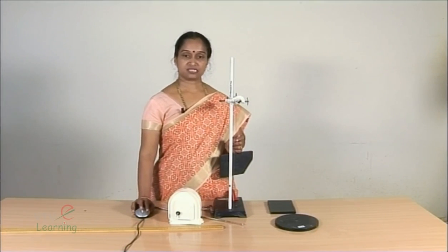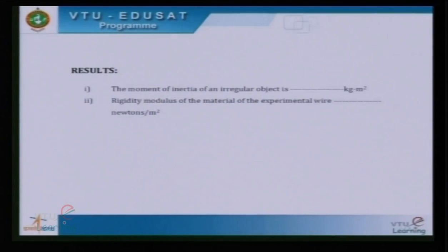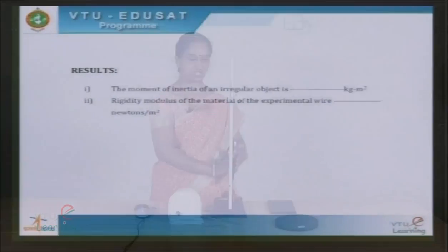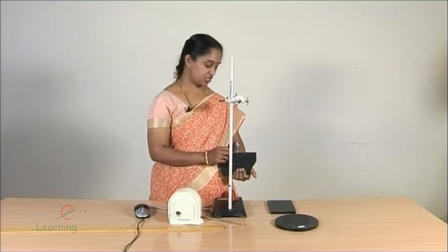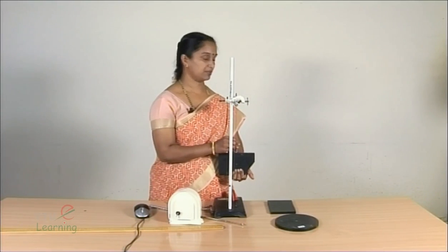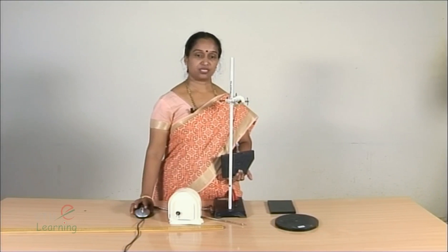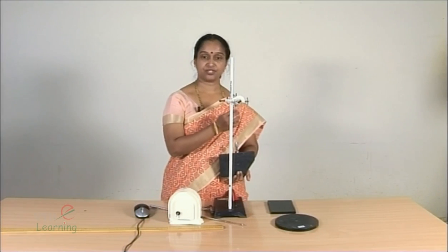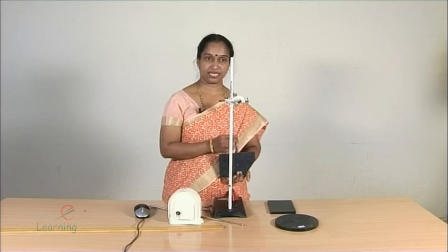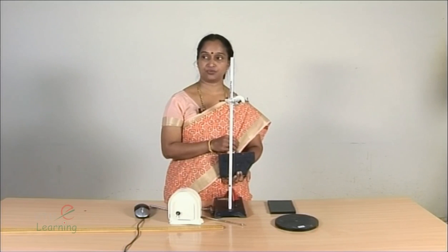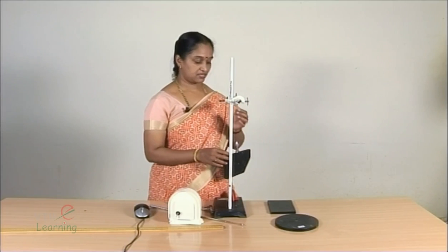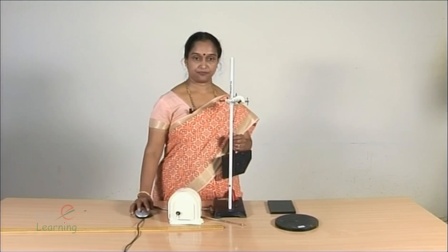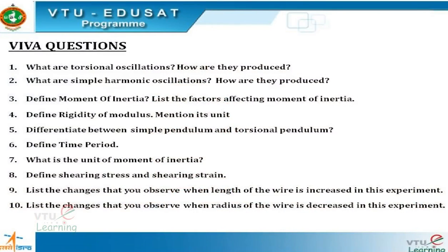The wire is made of steel material, and the value of rigidity modulus in this case ranges between 7 to 8 × 10¹⁰ N/m². The moment of inertia of the irregular object will be obtained depending on its size and shape, and the rigidity modulus comes to around 7 to 8 × 10¹⁰ N/m² confirming the material of the wire is steel. The probable viva questions for this experiment are as listed.